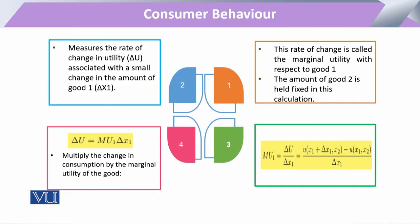Mostly, a consumer utilizes not a single commodity but a bundle of commodities. We have mostly studied a bundle having at least two commodities — one depicted on the x-axis and the other on the y-axis. Taking commodity x1 on the x-axis, we assume that for one unit change in the consumption of x1, what will be the change in the total utility of the consumer?